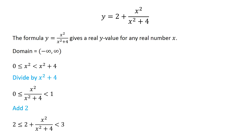Adding 2 to this inequality, we get 2 plus x squared over x squared plus 4 is greater than or equal to 2 and less than 3. Thus the range of this function is the set of all real numbers greater than or equal to 2 and less than 3.